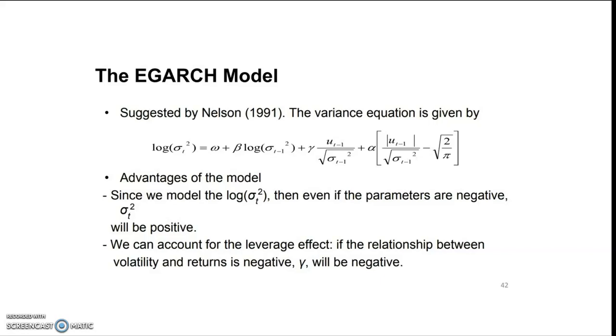Since we model the log of σ²t, even if the parameters are negative, σ²t will always be positive. We can account for the leverage effect: if the relationship between volatility and returns is negative, gamma will be negative.